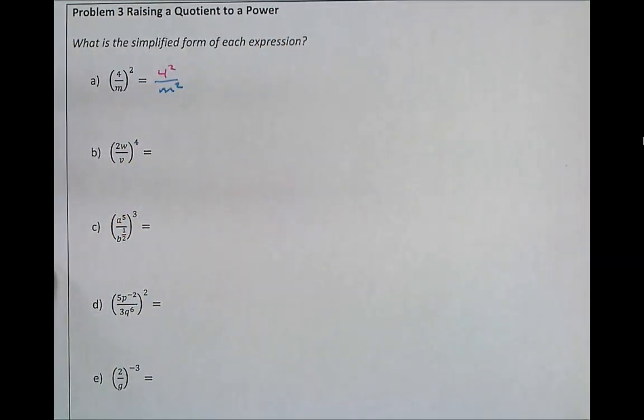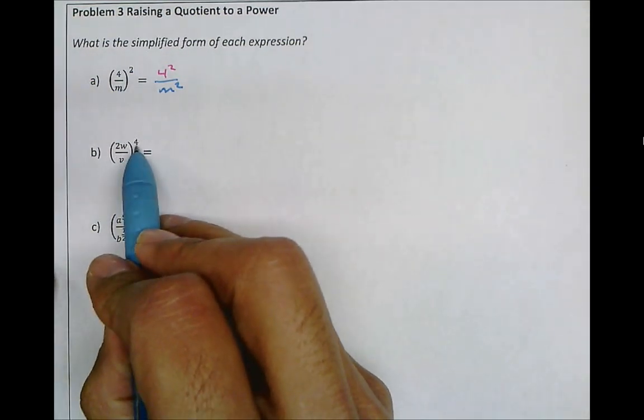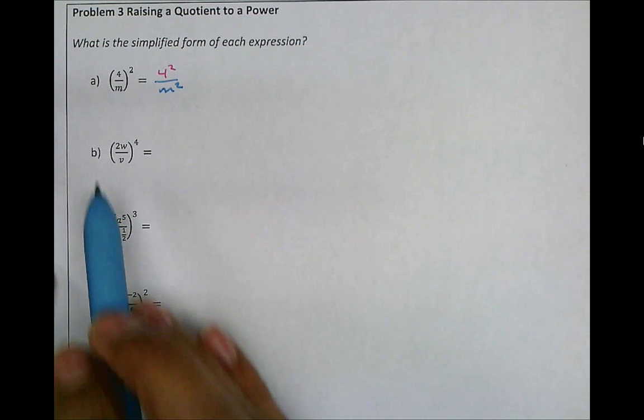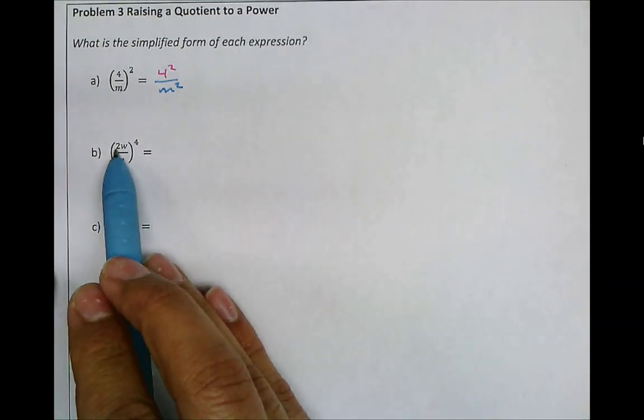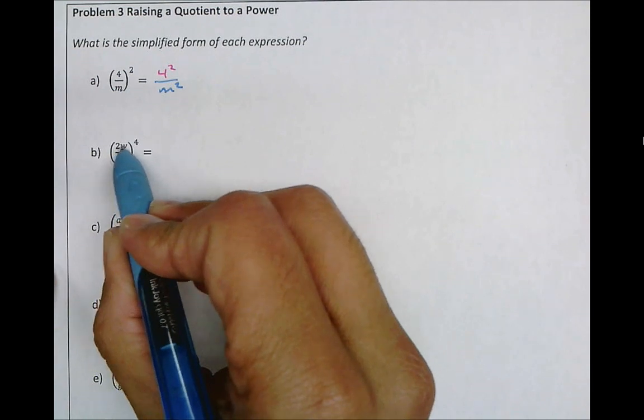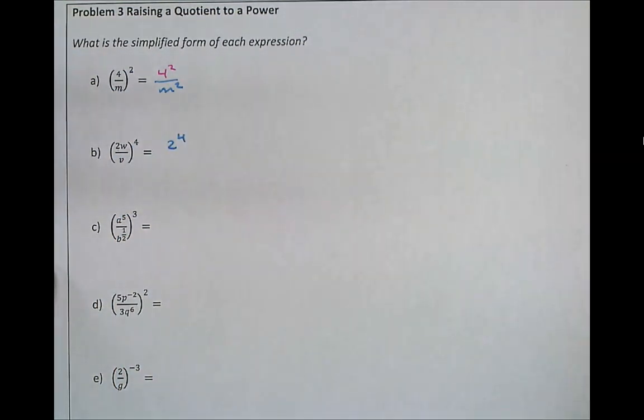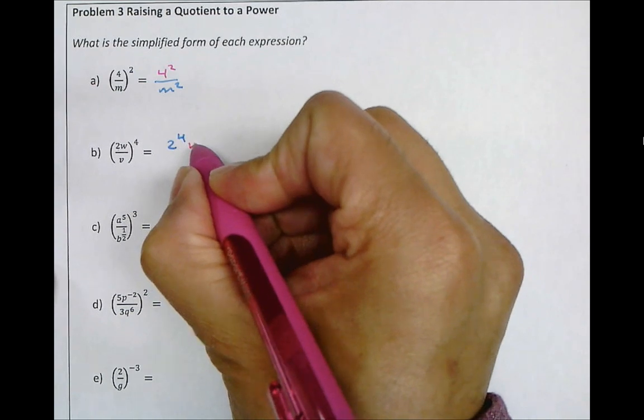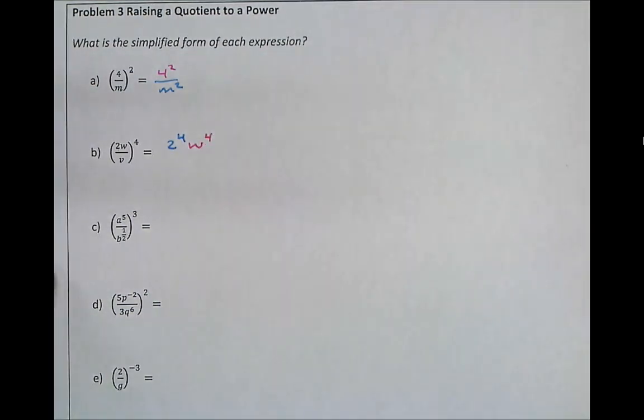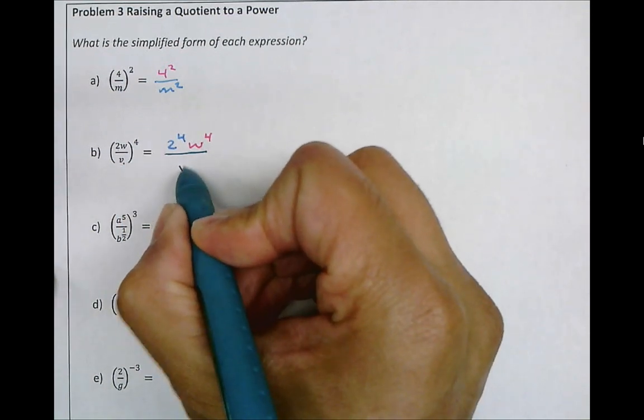And then we have 2w divided by v raised to the power of 4. So here we actually have three parts. We have the 2, the w, and the v. So first we have 2 to the power of 4. Second, we have the w to the power of 4. And in our denominator, we have v to the power of 4.